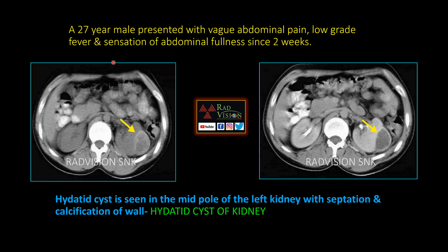Next case: a 27-year-old male presented with vague abdominal pain. You can see there is a cystic lesion with eccentric rim calcification arising from the mid pole of the left kidney. On IV contrast, you can see peripheral rim enhancement. This is a hydatid cyst in the kidney.